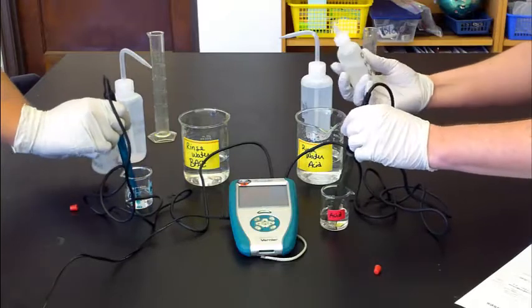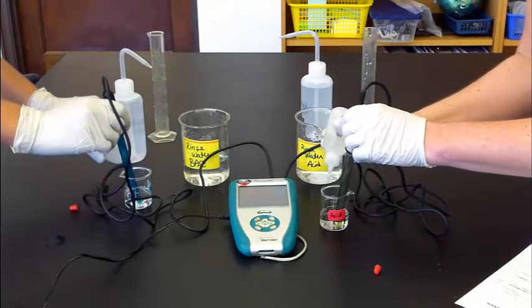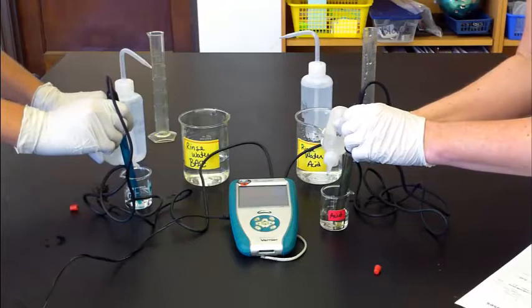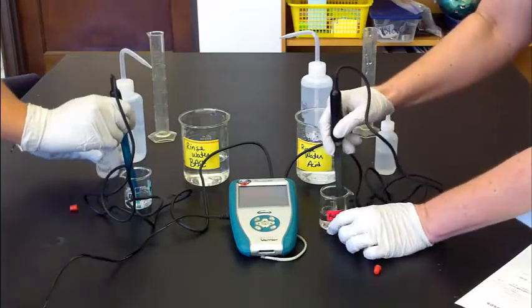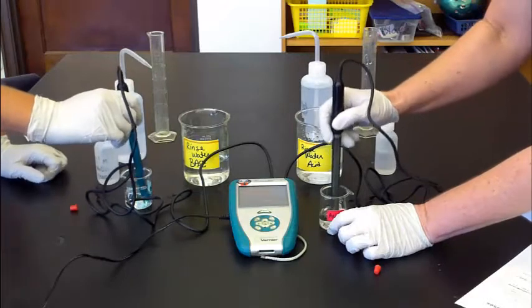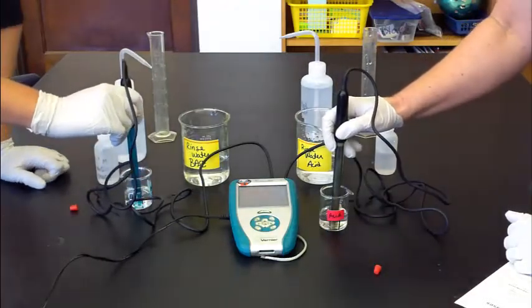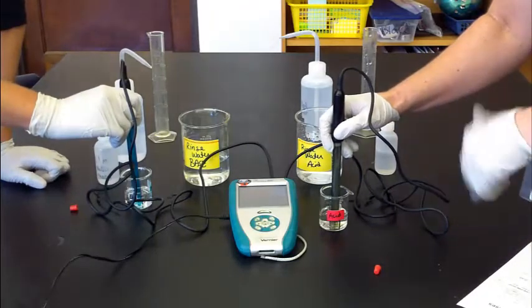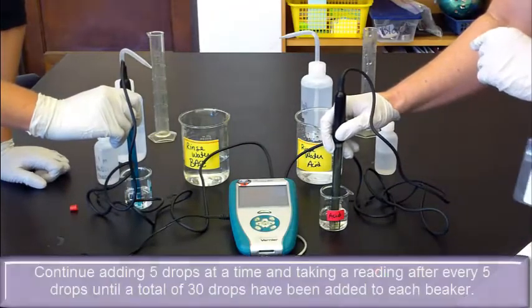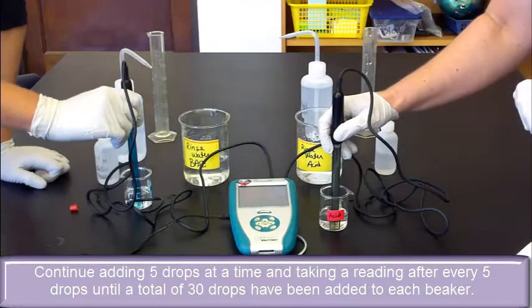And then you can put in five more drops: one, two, three, four, five. You can even use the probe to stir. Keep it still, take your second measurement, and then you will keep doing that five at a time until you reach a total of 30 drops.